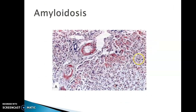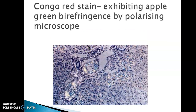This is the liver tissue. You can observe the Amyloid here, and the same Congo red stained tissue under a polarizing microscope exhibits the apple green birefringence.